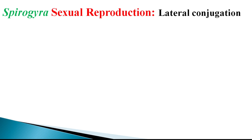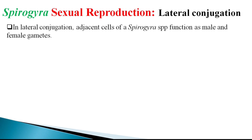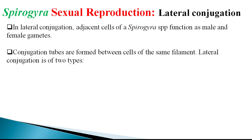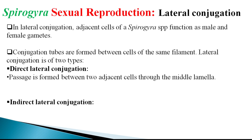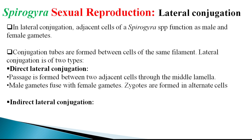In the case of lateral conjugation, adjacent cells of the Spirogyra species function as male and female gametes, and conjugation is identified by means of a conjugation tube. Conjugation bridges or tubes are established within the same filament. Lateral conjugation is further divided into two categories: direct lateral conjugation, where a passage is formed between two adjacent cells through the middle lamella, and indirect lateral conjugation.